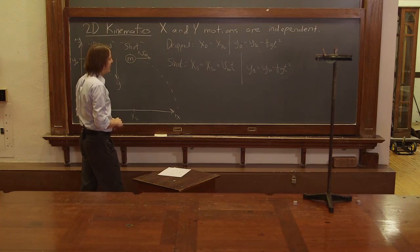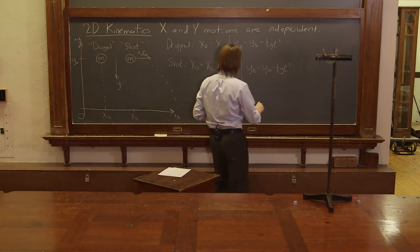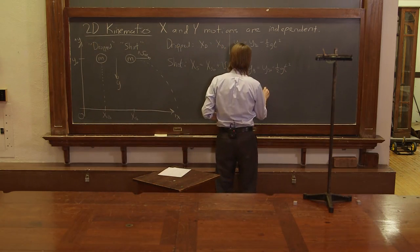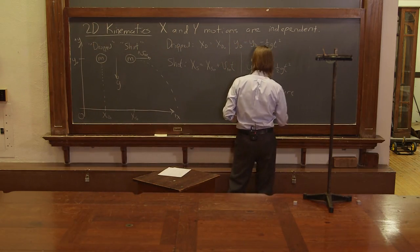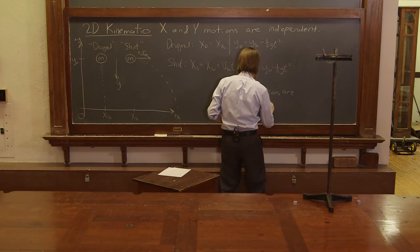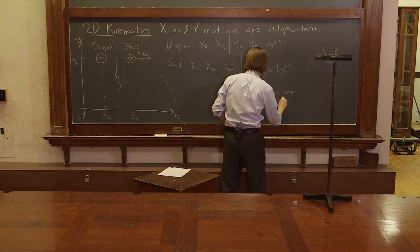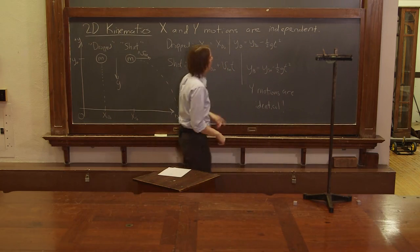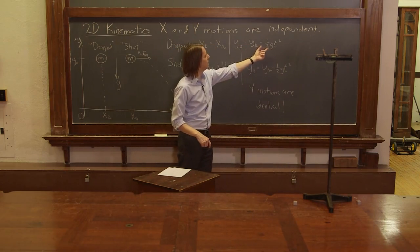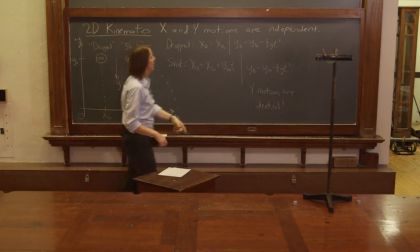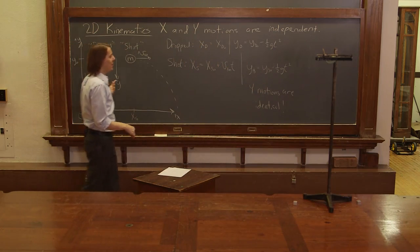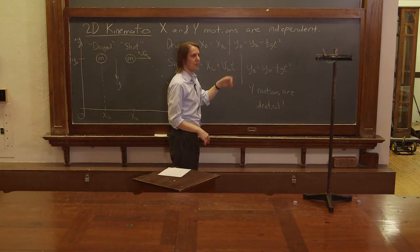One question is, do they hit at the same time? How long does it take them to fall? And for that, you'll notice that the Y motions are identical. Y D-naught minus one half G T squared. Y S-naught minus one half G T squared. And actually, Y D-naught and Y S-naught are the same thing. So in terms of the Y-axis, these are exactly the same motion.